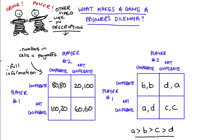Let's solve the game on the left-hand side. Imagine we're player one: if player two cooperates, player one could cooperate and get 80, or not cooperate and get 100. Since 100 is greater than 80, player one prefers not to cooperate. If player two does not cooperate, player one could cooperate and get 20, or not cooperate and get 60. Since 60 is bigger than 20, not cooperating is player one's best response to player two not cooperating as well.